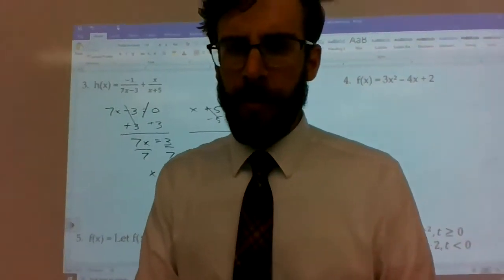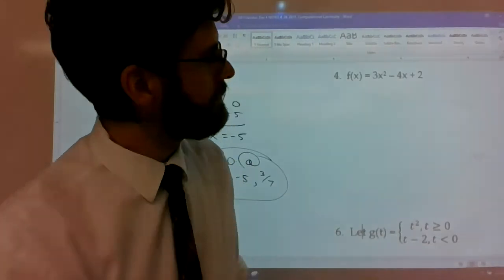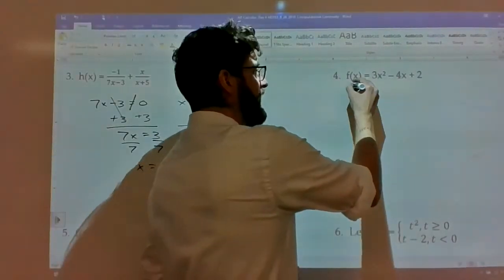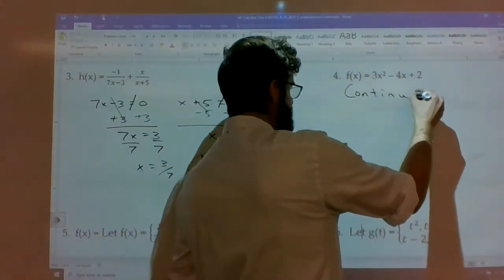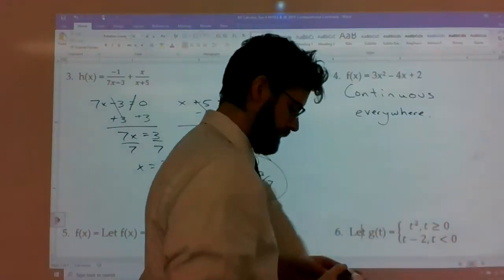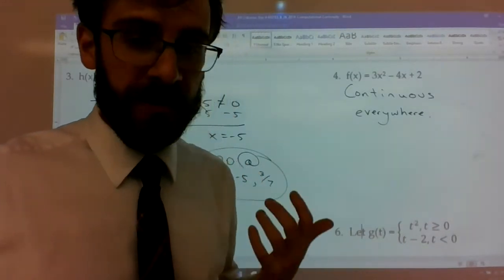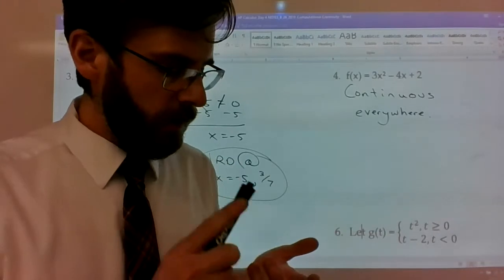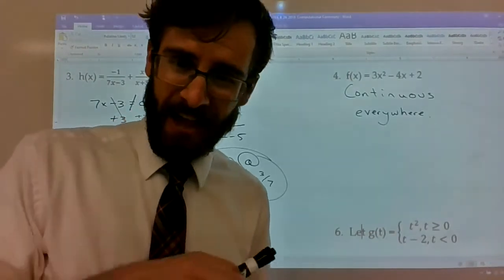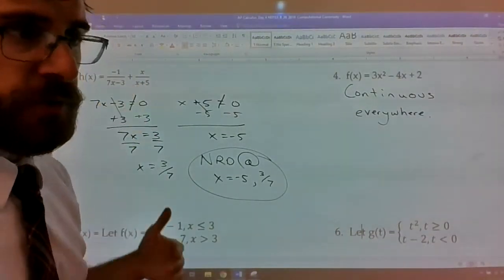In the textbook, there's a theorem about polynomials: a polynomial function is continuous everywhere — no removable or non-removable discontinuities at all. Odd roots also don't have domain issues normally. Absolute value functions that don't have a rational component — no fraction with variables on the bottom — are also continuous everywhere.